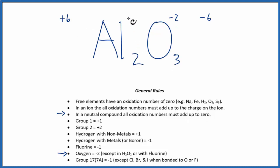So 2 times some number will give me plus 6. 2 times plus 3, that's plus 6. So the oxidation number on each aluminum is going to be plus 3.